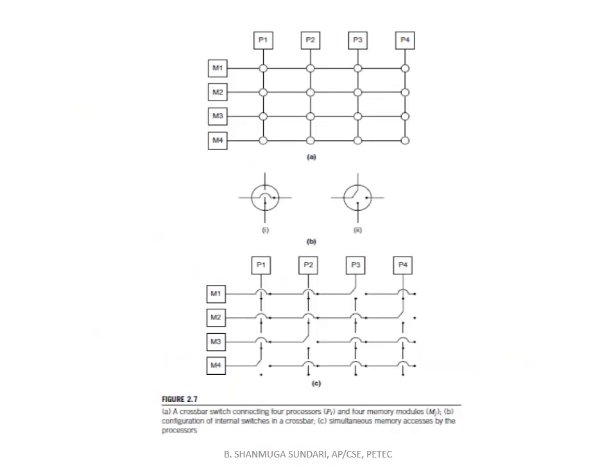In the crossbar diagram, P1, P2, P3, P4 represent processors and M1, M2, M3, M4 represent memory modules, while circles represent switches. The diagram shows the opening and closing of switches and simultaneous memory accesses: P1 writes to M4, P2 reads from M3, P3 reads from M1, and P4 reads from M2. As the size increases, the switch-based interconnect count also increases.